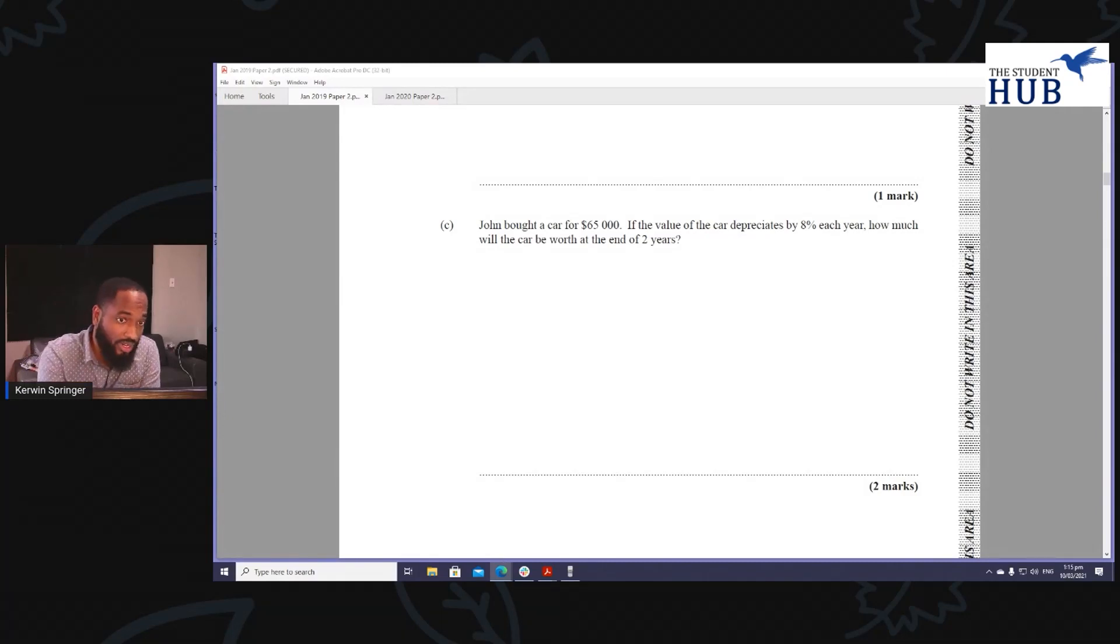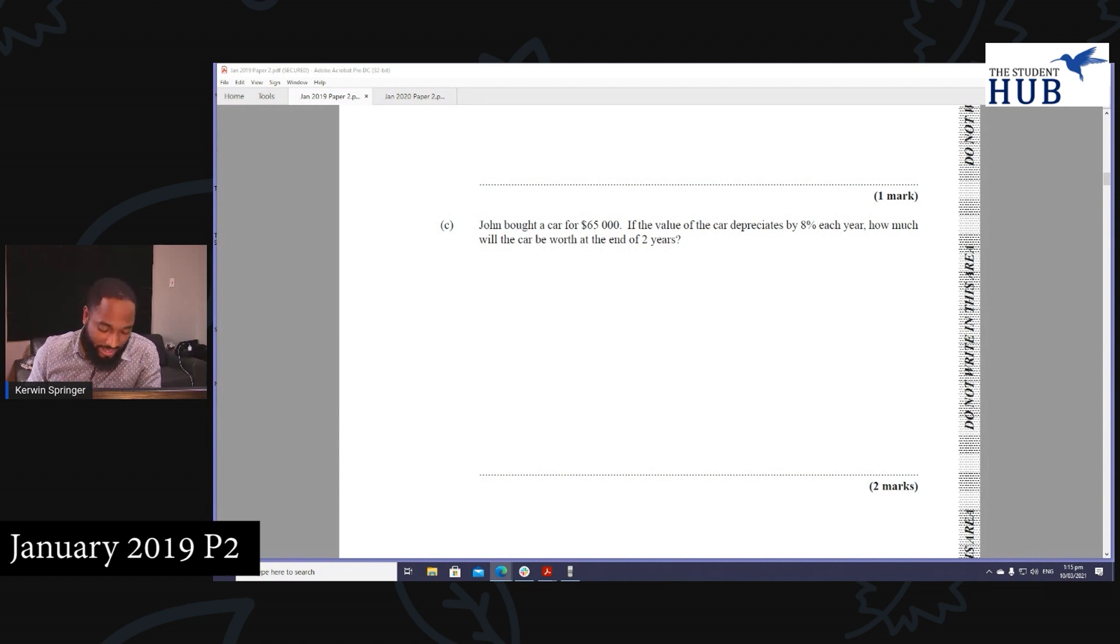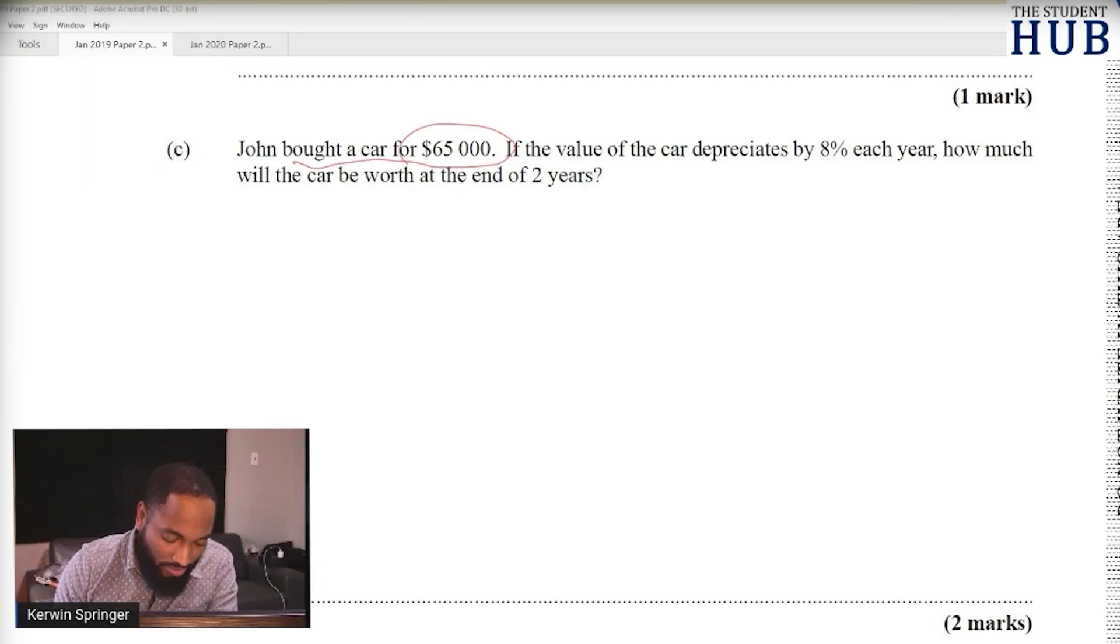We are continuing our journey in consumer arithmetic. We're doing depreciation today. This question came in January 2019. John bought a car for $65,000 - this is the principle, the value of the car. It depreciates 8% - this is the interest. And our time of depreciation, the period, is 2 years.